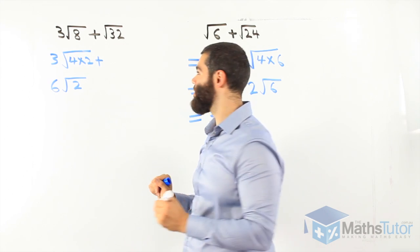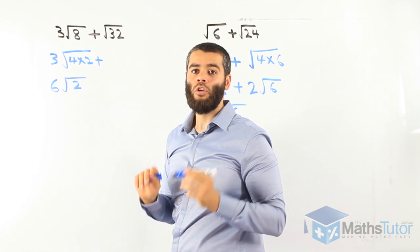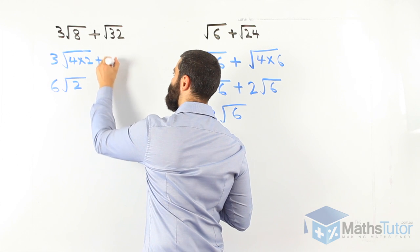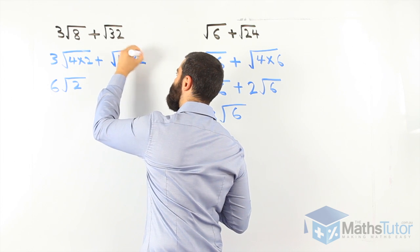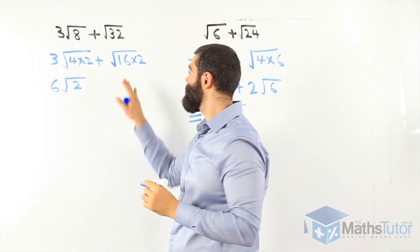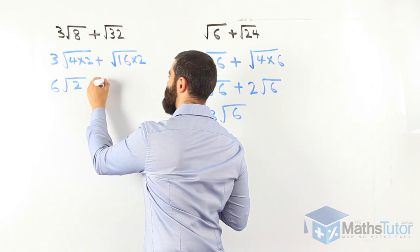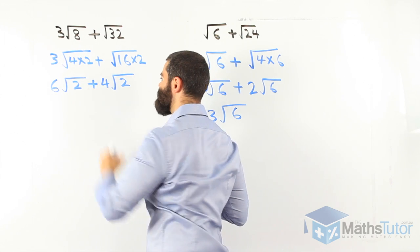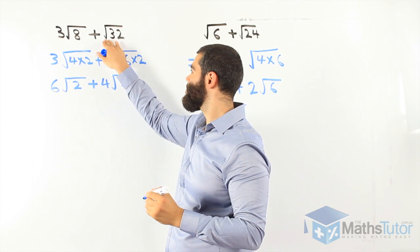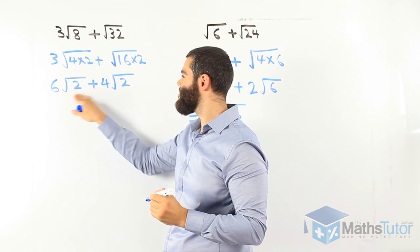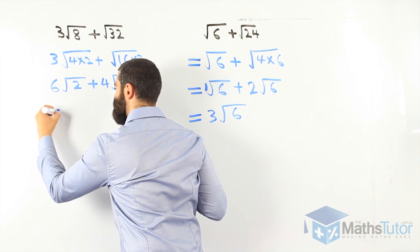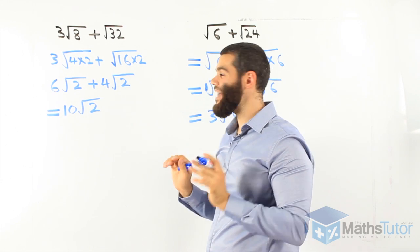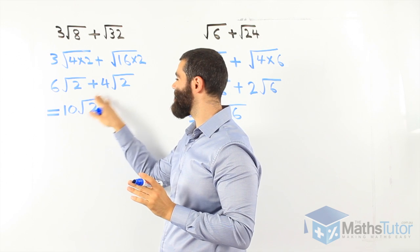Now let's simplify root 32 — two factors that multiply to get 32, one must square root: 16 times 2. Square root of 16 is 4, so 4 comes out and 2 stays inside: 4 root 2. Now we have 6 root 2 plus 4 root 2 — like thirds! 6 plus 4 is 10 root 2. Once we simplify, we find the like thirds and add them up.